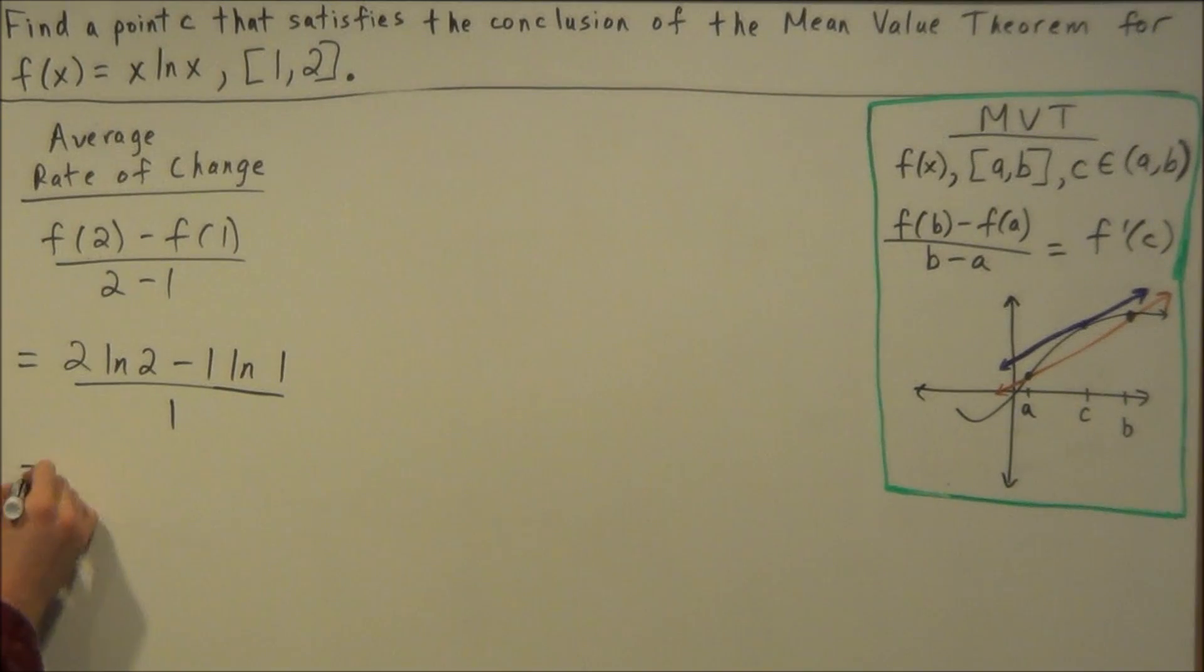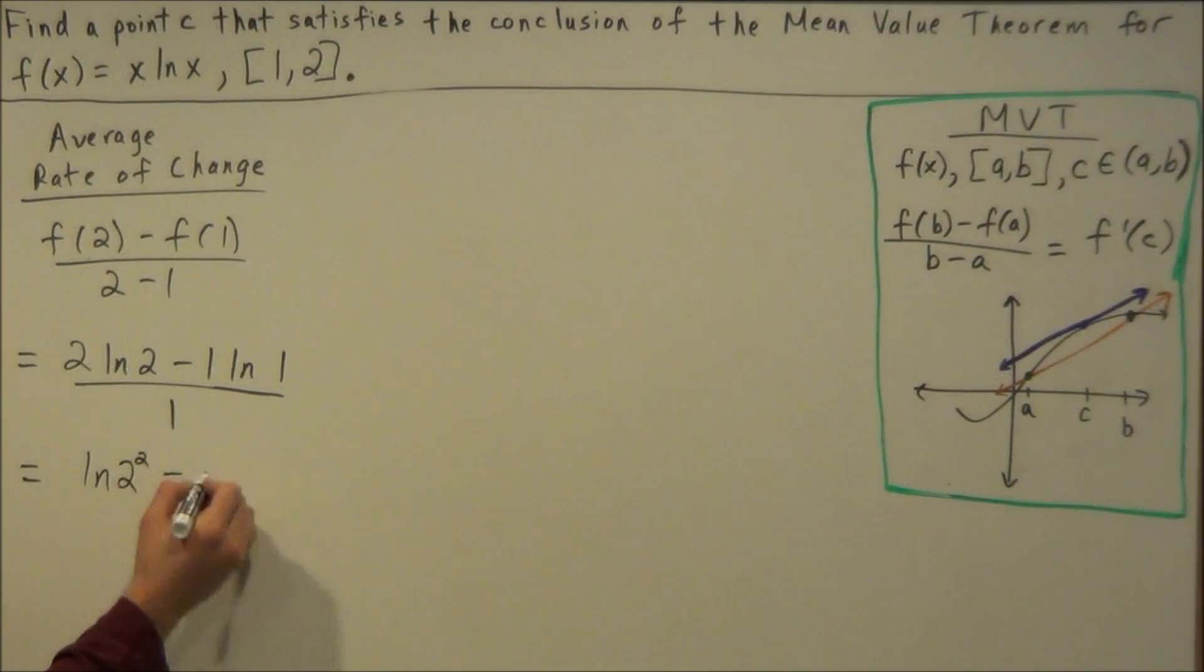So for the next line, we could simplify this a bit. This 2, we're going to use the property of logs, and we're going to send it back in as an exponent. So this will be natural log of 2 to the second power minus natural log of 1 is 0, divided by 1. So the average rate of change of f(x) on the closed interval from 1 to 2 is natural log 4.